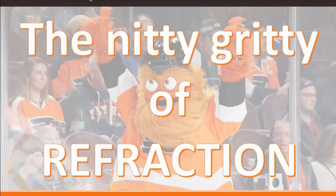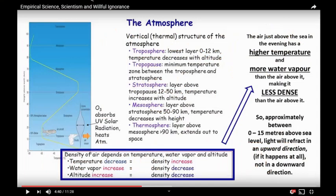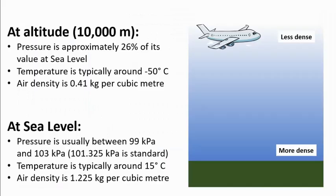Apologies in advance that this one might get a little bit long — I've got about 21 slides to get through. I've had a lot of questions and conversations in the comments about refraction. I also have Dr. John D's response to me to respond to. His basic premise is that between 0 and 15 meters above sea level, under normal conditions, light will refract upwards — in other words, there will be a density gradient inversion. So let's have a look at what our atmosphere actually looks like.